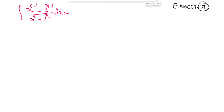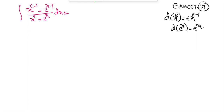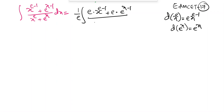This is an MSet 2017 problem. Integration of (x^(e-1) plus e^(x-1)) by (x^e plus e^x) dx. The derivative of x^e is e·x^(e-1) and the derivative of e^x is e^x. Multiplying and dividing by 1/e in the numerator gives e·x^(e-1) plus e·e^(x-1), which is e·x^(e-1) plus e^x.